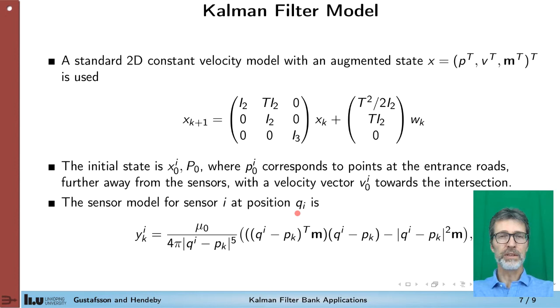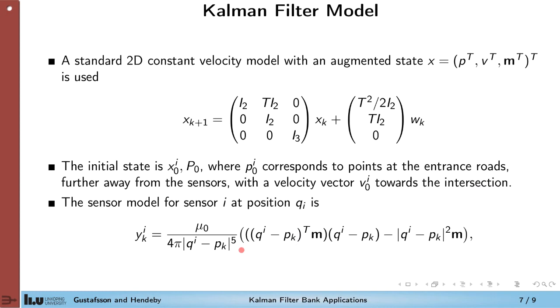In the setup we initialize each Kalman filter a bit differently depending on the hypothesis. And we have two sensors. We can assume that the position is known and denoted qi.